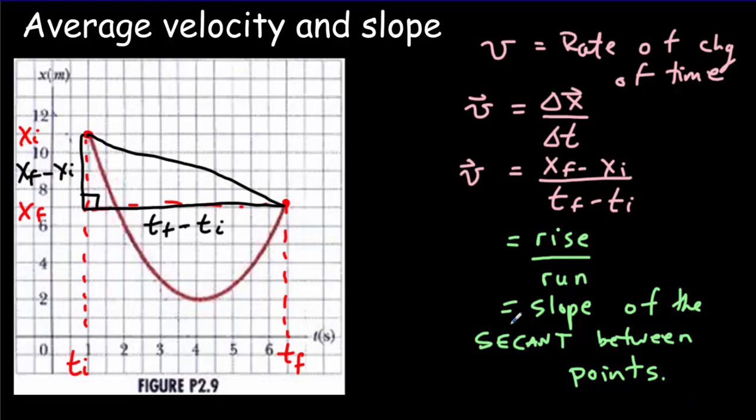Notice here that the velocity that we calculated only depended on the two points in question. Didn't depend on how you got there. And in fact this is an average velocity. And that average velocity we say it's independent of path. It only depends on where you started, where you ended, and how much time it took to go between those two points.